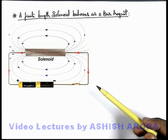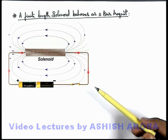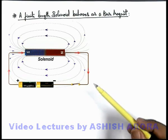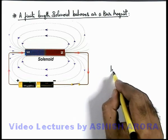So here we can see and state that a current carrying solenoid behaves like a bar magnet. In this situation, if we talk about